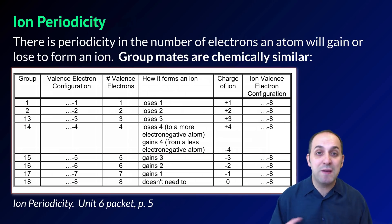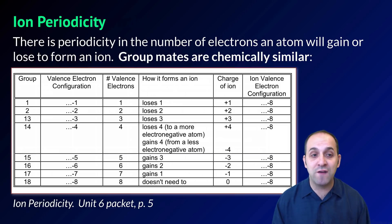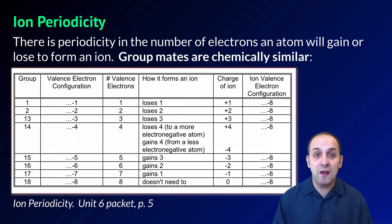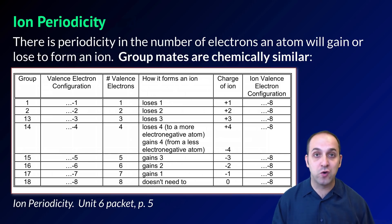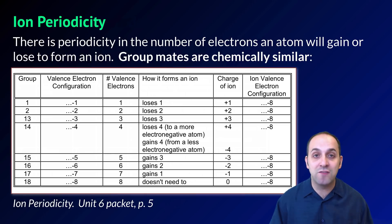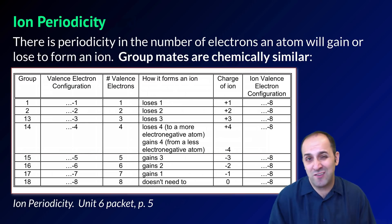Another thing to understand is that we see periodicity in the ions that elements form. The group an element is in dictates what ions it can form. Elements in group one with one valence electron will lose that electron to form a +1 ion. Group two will lose two to form +2. Group thirteen has three valence electrons and forms +3. At group fourteen, elements can either gain or lose four electrons. Past that, groups fifteen, sixteen, and seventeen will gain three, two, or one electrons to form -3, -2, or -1 ions. Group eighteen has a stable valence configuration and generally won't gain or lose electrons — it doesn't bond.